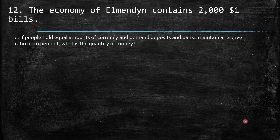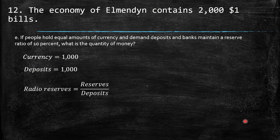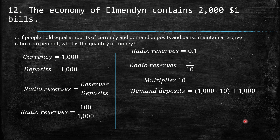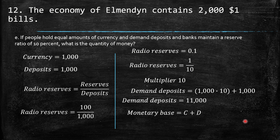Part E: If people hold equal amounts of currency and demand deposits, and banks maintain a 10% reserve ratio: currency is $1,000 and deposits are $1,000. Reserves are 10% of deposits = $100, giving a reserve ratio of 10% and a multiplier of 10. Demand deposits expand to $1,000 × 10 = $10,000, plus the original $1,000 deposits = $11,000 total deposits. The quantity of money equals currency plus deposits: $1,000 + $11,000 = $12,000.